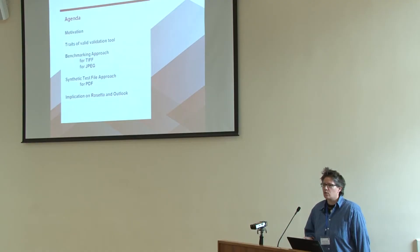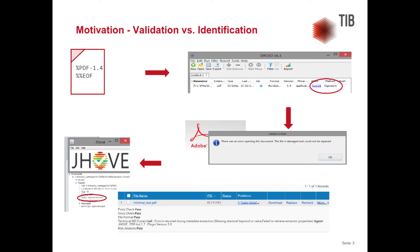I'll conclude by stating the implications on Rosetta and give an outlook for the future. On validation versus identification: I've talked to a lot of people who say they don't really need to validate their formats — they identify them. If you go back to your hotel tonight, open a text editor, write those two lines, save it as a PDF, and run it through DROID — DROID will tell you yes, that's indeed a PDF file based on signature identification.